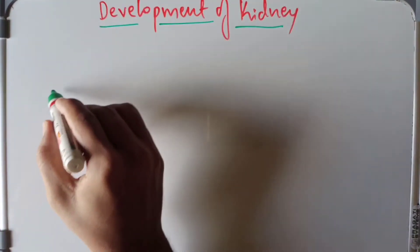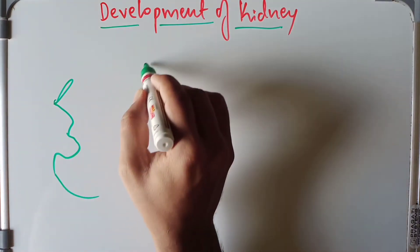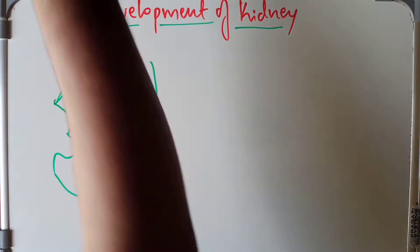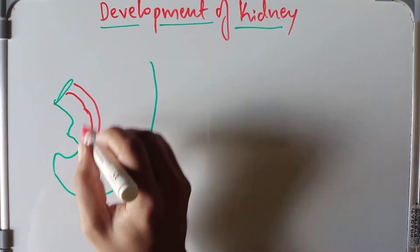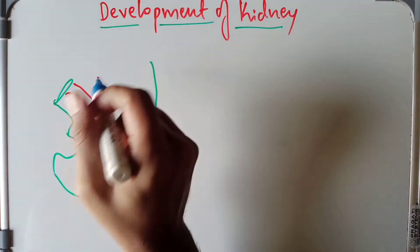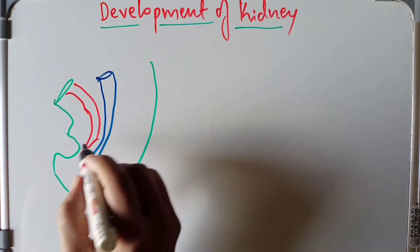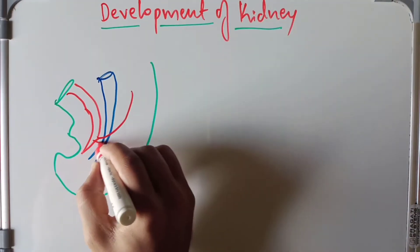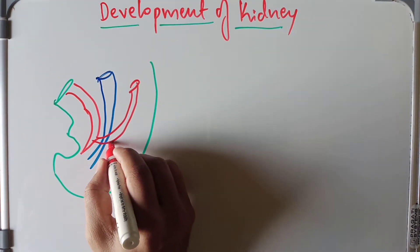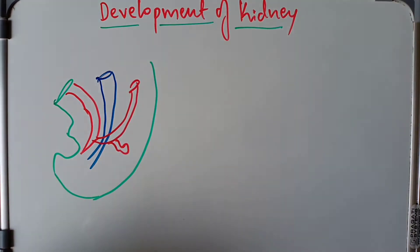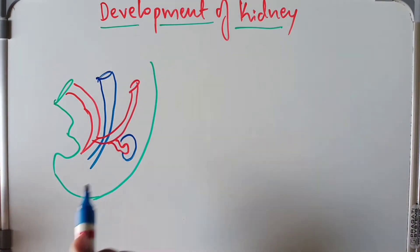Basically, if this is the embryo with the umbilical cord of the developing fetus, this is the caudal limb of the fetus. From the umbilicus we have the allantois, and just behind the allantois we have the hindgut. From the allantois arises the mesonephric duct, and from the mesonephric duct a bud arises called the ureteric bud. Around the ureteric bud we have the metanephros, also called the metanephric cap.